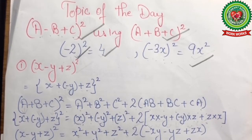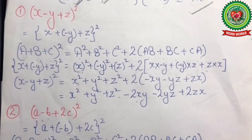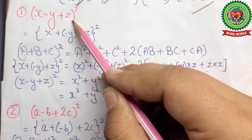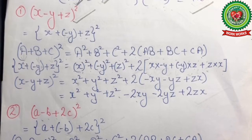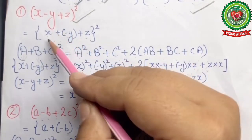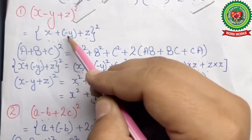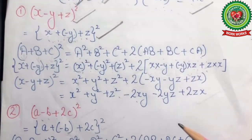Let us discuss some examples based on this topic. The first example is (x - y + z)². Our first step will be to rewrite this statement in the form of (a + b + c)². So we rewrite it as x + (-y) + z, whole square, which is in the form of (a + b + c)².